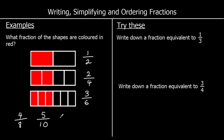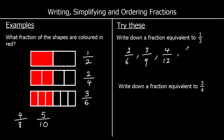For question one, we could have multiplied the top and bottom by two to get two sixths — one times two is two, and three times two is six. Or we could have multiplied top and bottom by three to get three over nine. Or by four to get four twelfths. Or five fifteenths. And we can keep on going — this list would never end, we could keep on going forever.